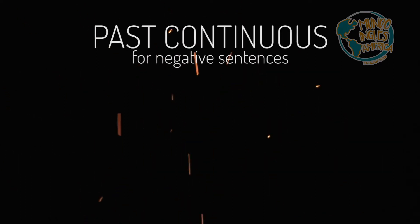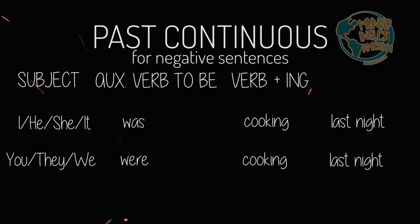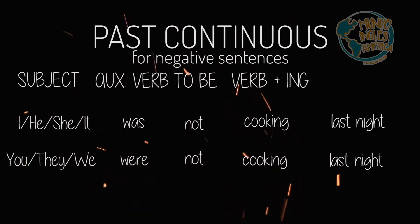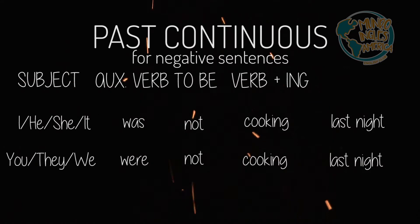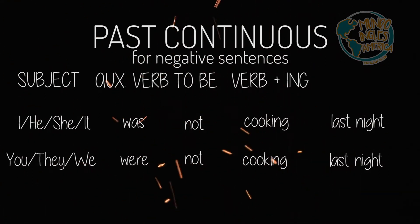In order to form the negative sentence for the past continuous, we add the word 'not' in between the past form of the auxiliary verb to be and our main verb, which here is 'cooking'. So we have: he was not cooking last night, and we were not cooking last night.